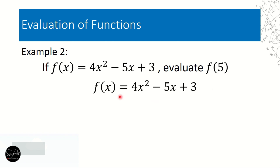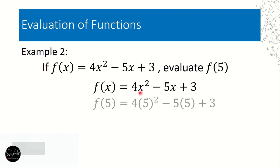Copy our function notation: f(x) = 4x² - 5x + 3. Remove x and substitute 5. So f(5) = 4 times 5² minus 5 times 5 plus 3. In this case, we will first evaluate the exponent, following the order of operation PEMDAS.